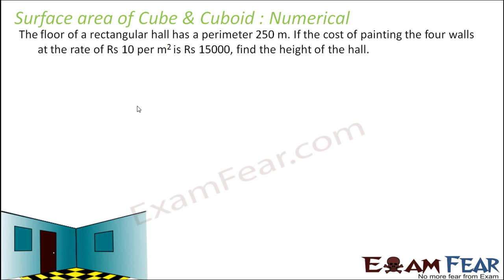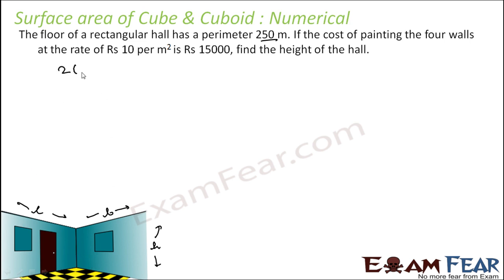Again there is a question on the room. The floor of a rectangular hall has a perimeter of 250 meters. If the cost of painting 4 walls at the rate of ₹10 per meter square is ₹15,000, we have to find the height of the hall. So defining length, breadth, and height, the perimeter of the rectangular hall is 2 × (length + breadth) = 250 meters.